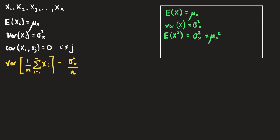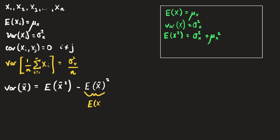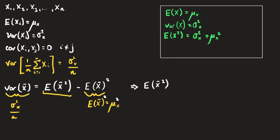We can also calculate the variance of the sample mean as E[x̄²] - (E[x̄])². Since the observations are iid, E[x̄] = μx, so (E[x̄])² = μx². The variance of the sample mean is σ²x/n, so rearranging gives us E[x̄²] = σ²x/n + μx².